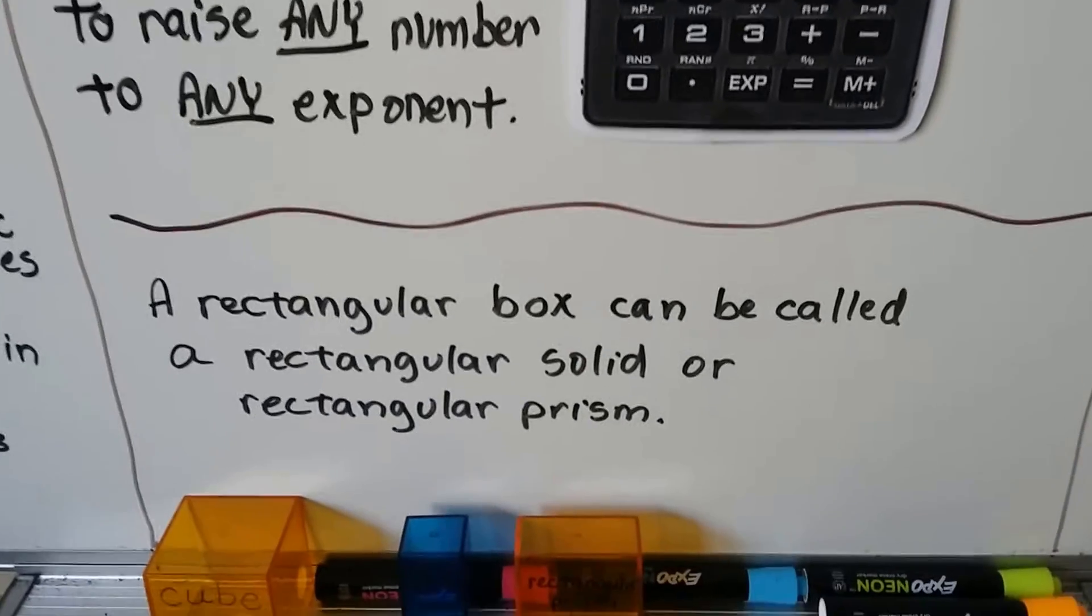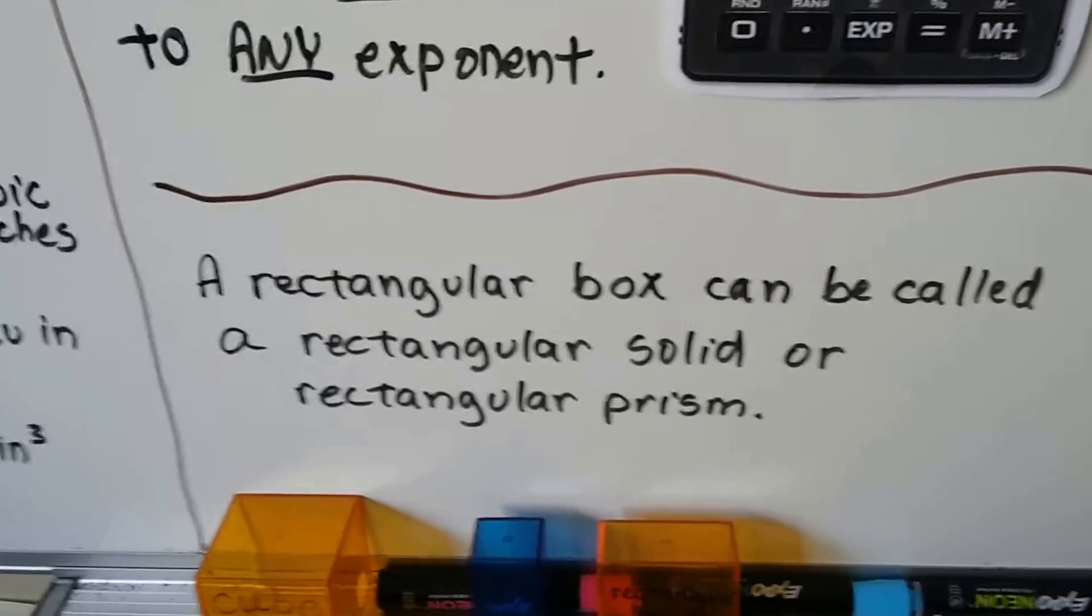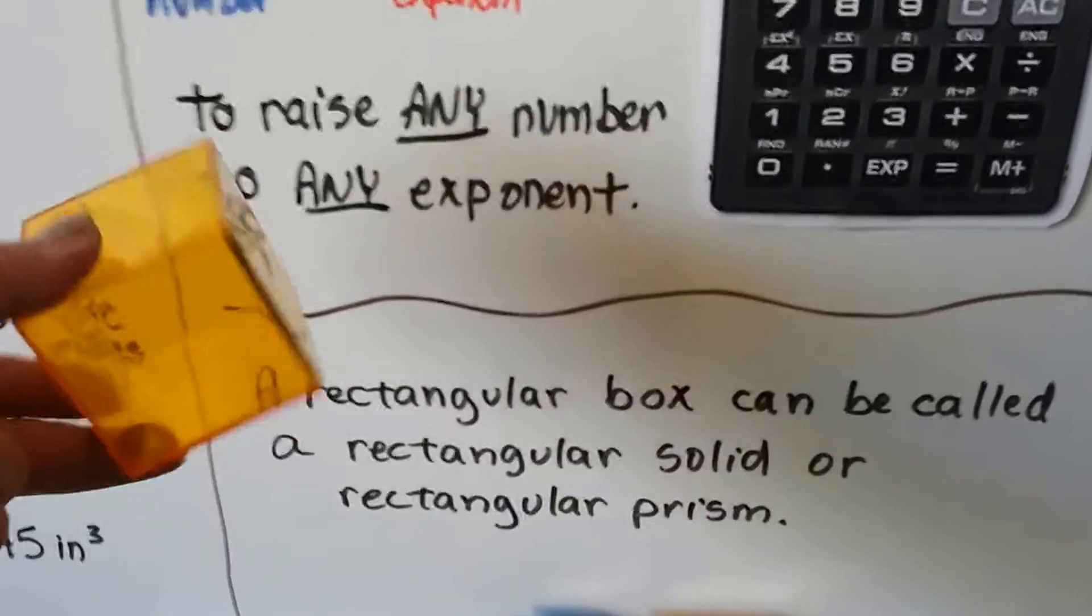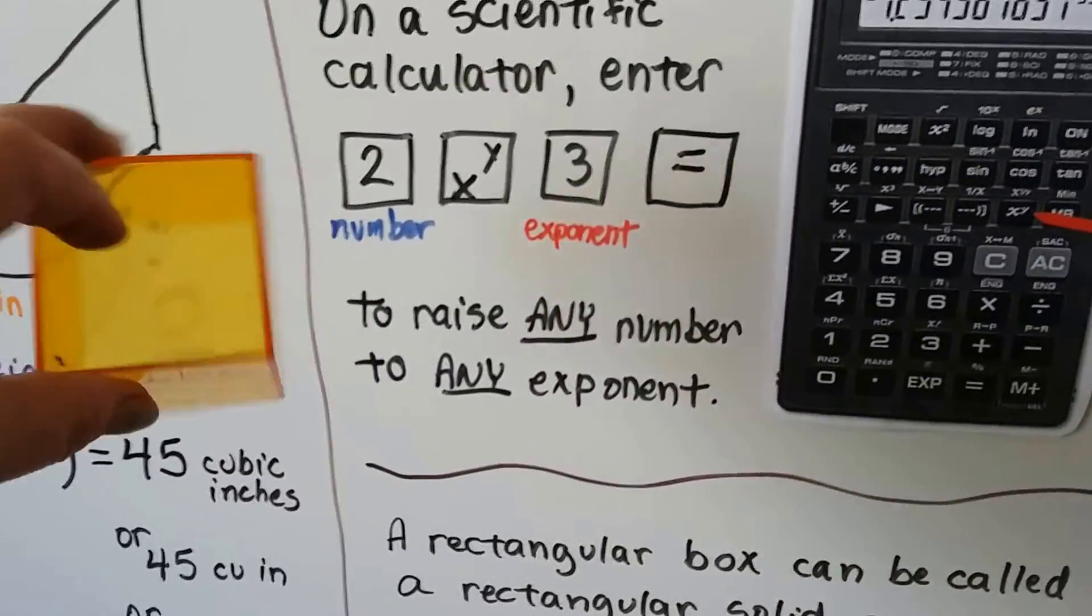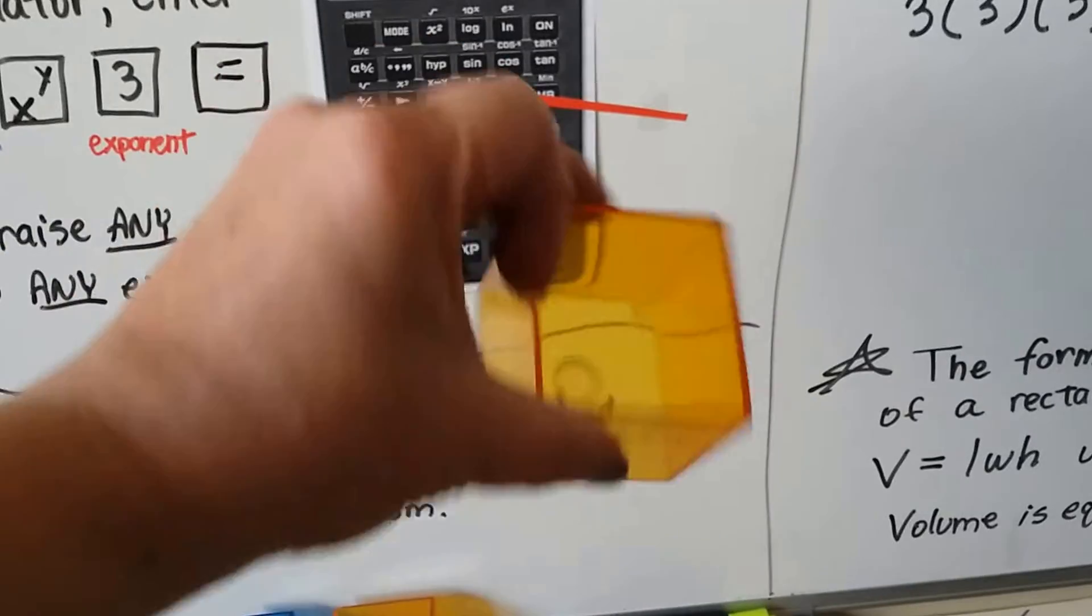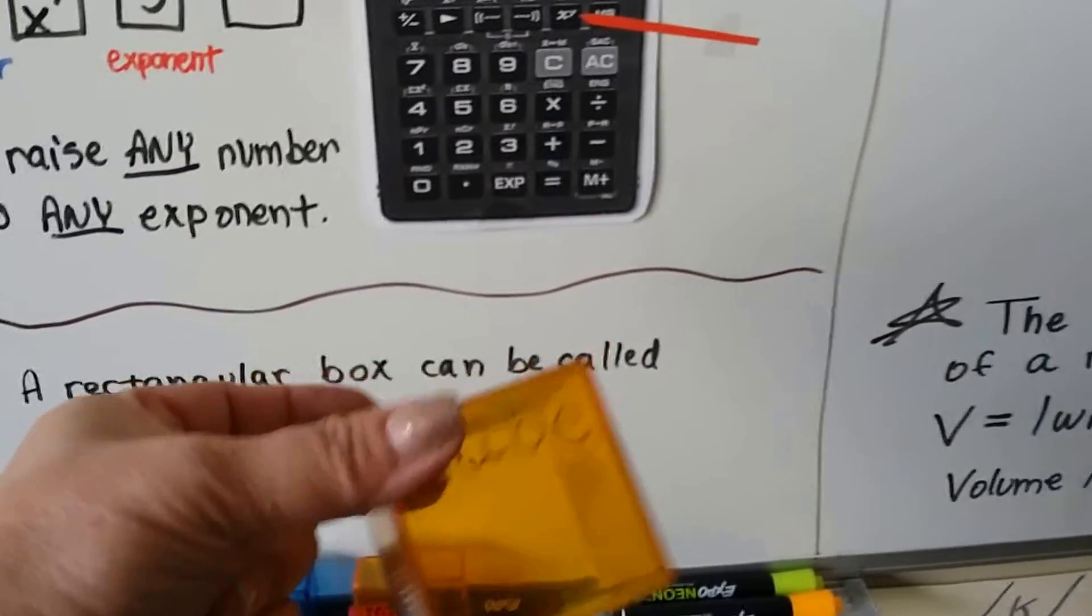Now a rectangular box can also be called a rectangular solid or a rectangular prism. So here I've got a cube, and you can see it's a square box. It's the same measure on every single side. Every side is the same length, so it makes a square cube. That's a cube.